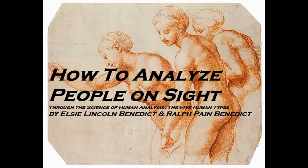Contents: Human Analysis. Chapter 1: The Alimentive Type, The Enjoyer. Chapter 2: The Thoracic Type, The Thriller. Chapter 3: The Muscular Type, The Worker. Chapter 4: The Osseous Type, The Stayer. Chapter 5: The Cerebral Type, The Thinker. Chapter 6: Types That Should and Should Not Marry Each Other. Chapter 7: Vocations For Each Type.